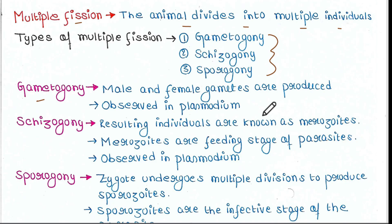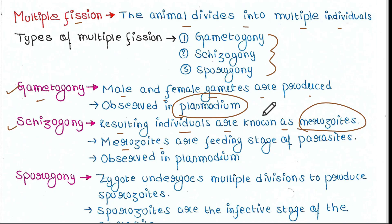Gametogony: here male and female gametes are produced. This is observed in plasmodium. In schizogony, the resulting individuals are known as merozoites, which are the feeding stage of parasites. This is again observed in plasmodium.